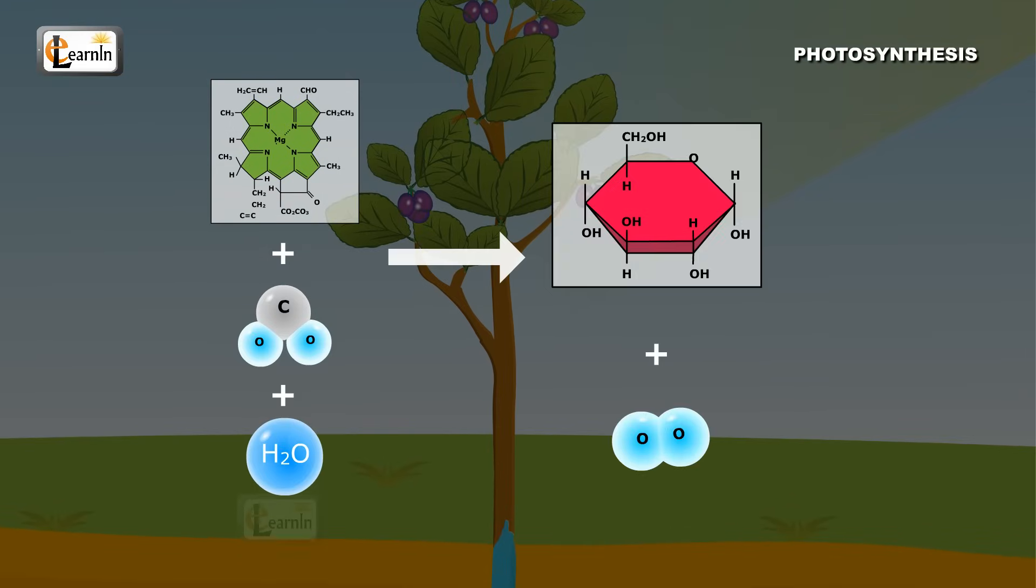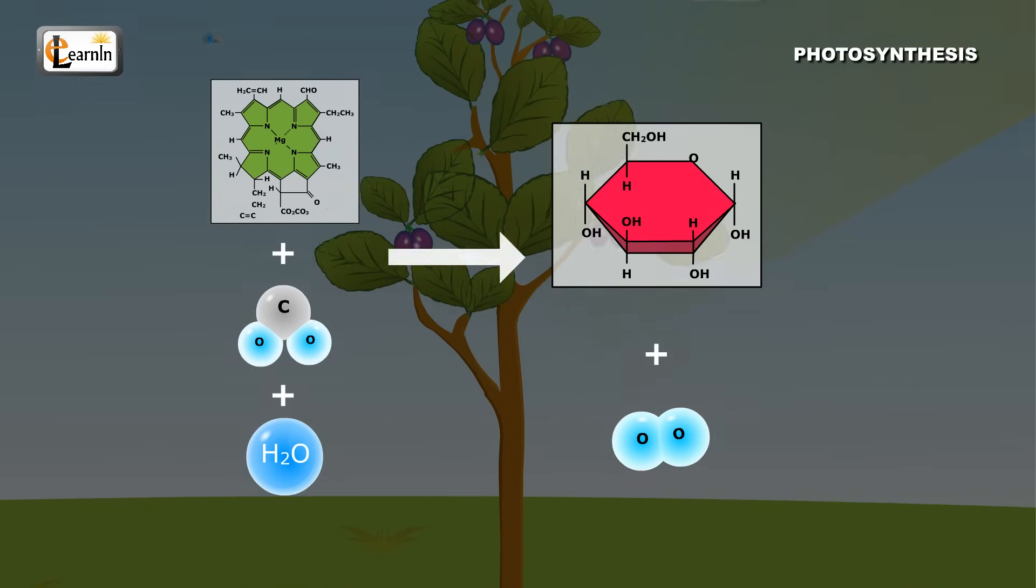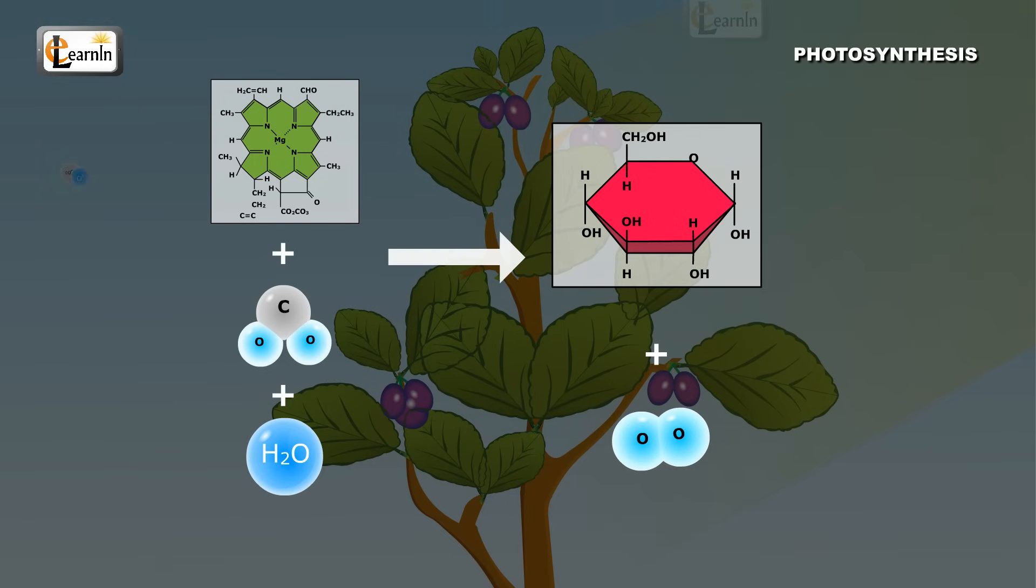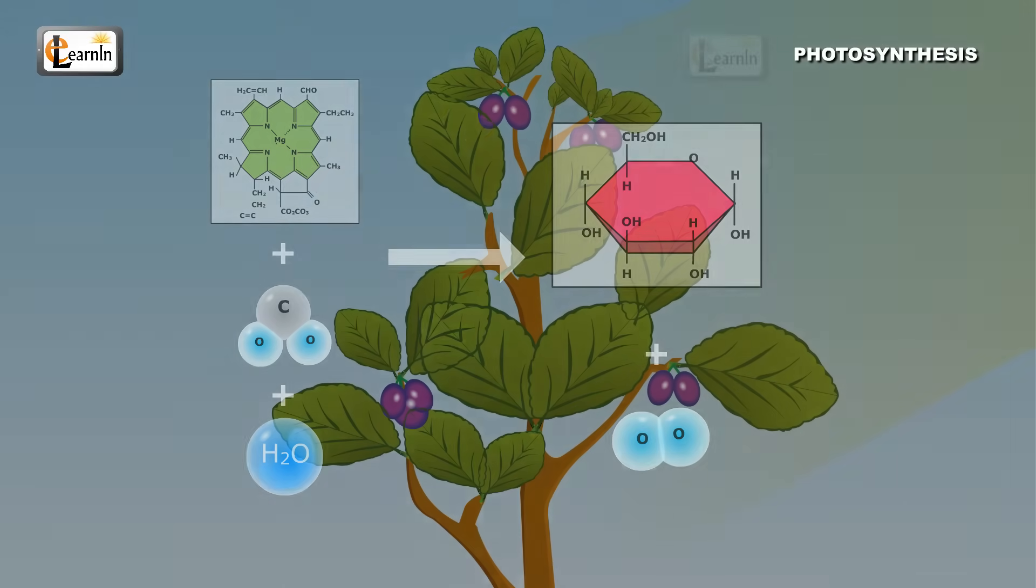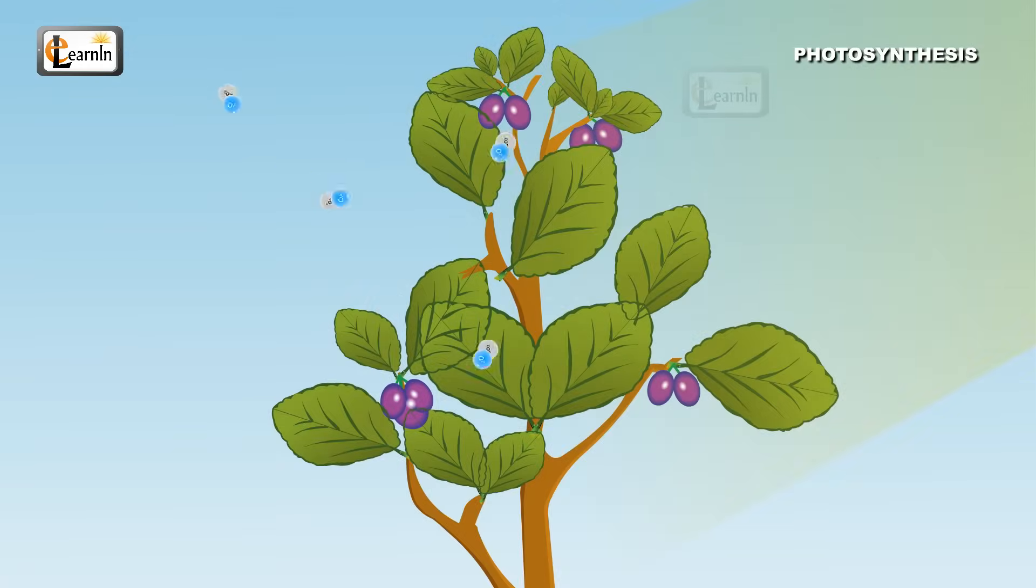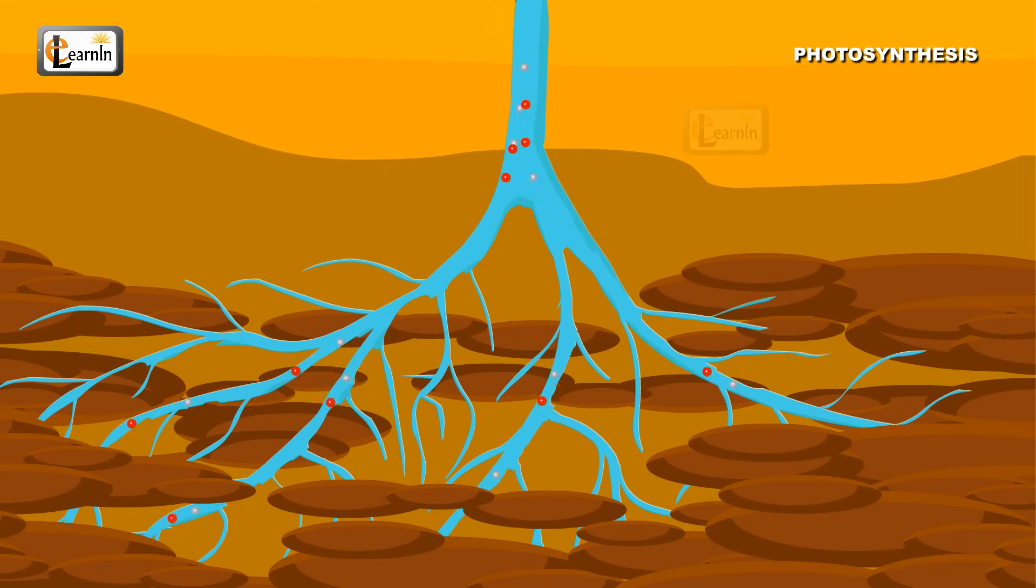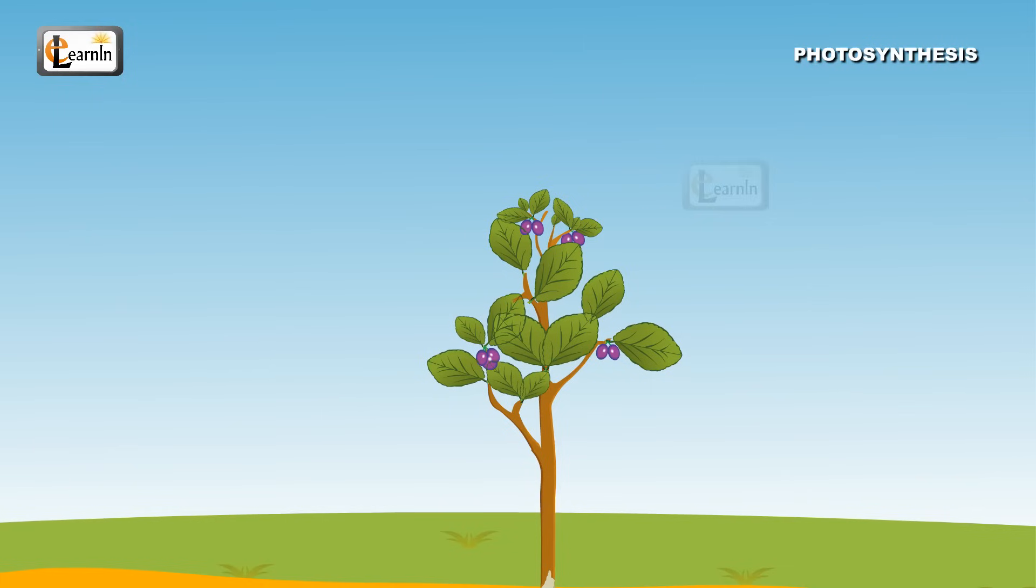Glucose is used by the plants for their growth. Some of the glucose is used immediately, and the extra glucose, which is not used, is stored in the form of starch in the leaves. Some amount of this extra glucose is also stored in the roots of the plants. This extra glucose is used to perform photosynthesis when there is no sunlight.